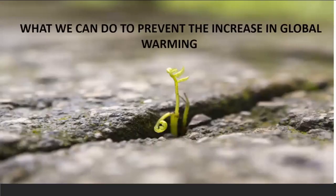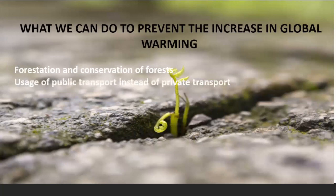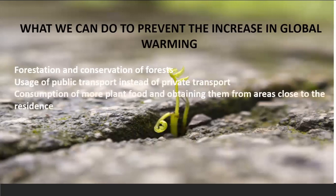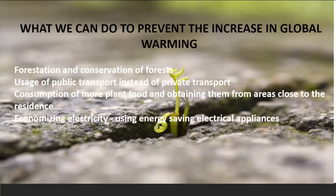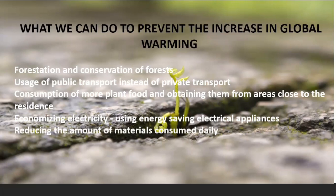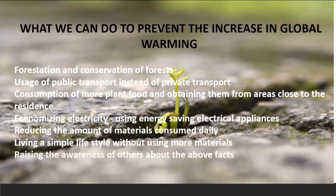What can we do to prevent the increase in global warming? Forestation and conservation of forests; usage of public transport instead of private transport; consumption of more plant food obtained from areas close to the residence; economizing electricity by using energy-saving appliances such as CFL bulbs instead of incandescent light bulbs; reducing the amount of materials consumed daily, and reusing and recycling materials; living a simple lifestyle; and raising awareness of others about global warming.